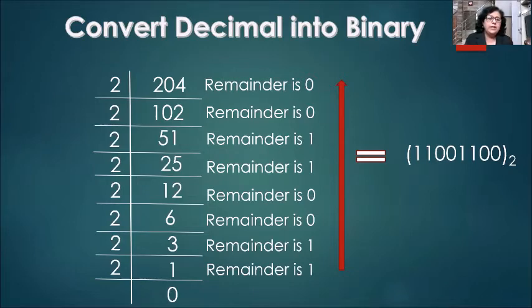On dividing it by 2, we get answer as 102, which we will write down. Since 204 is completely divisible by 2, the remainder will be 0, which we will write on the right hand side. We will continue dividing the number by 2 till the time it is possible.